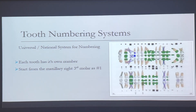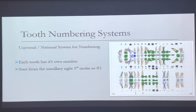This is the universal system where the teeth are labeled 1 through 32. You start in the upper right quadrant — that wisdom tooth is number one — and then you go all the way around to the left, which would be tooth number 16. Then you drop down, and at 17 you go back over to the right to where you have number 32.